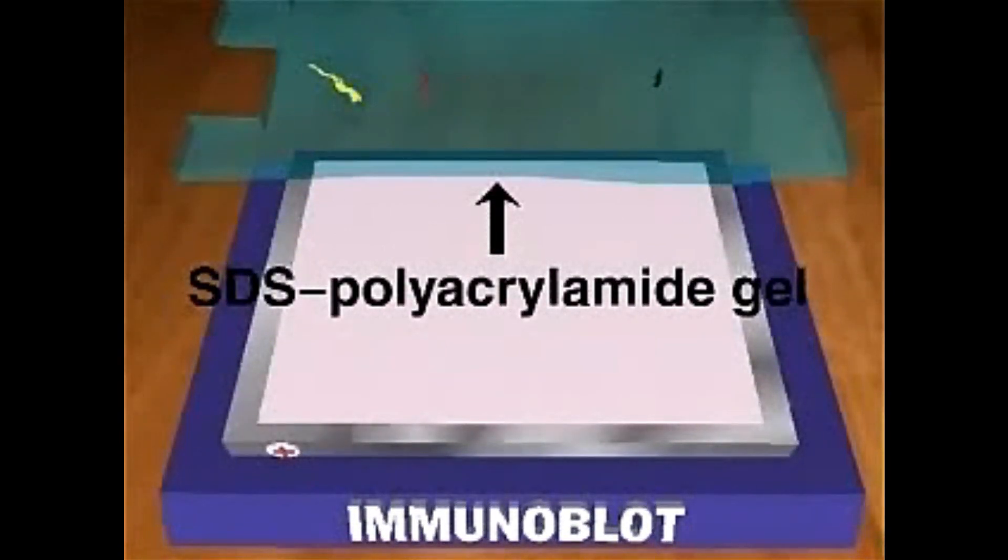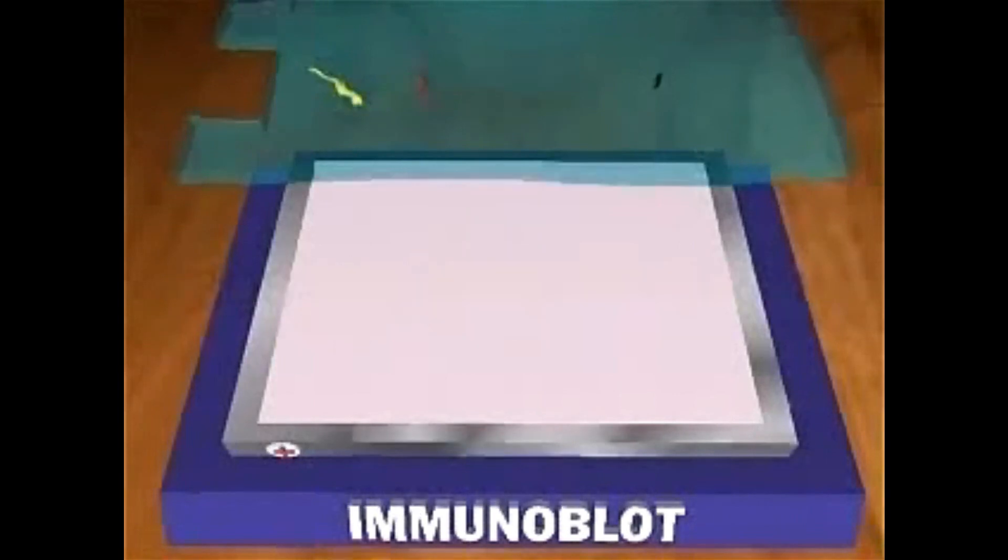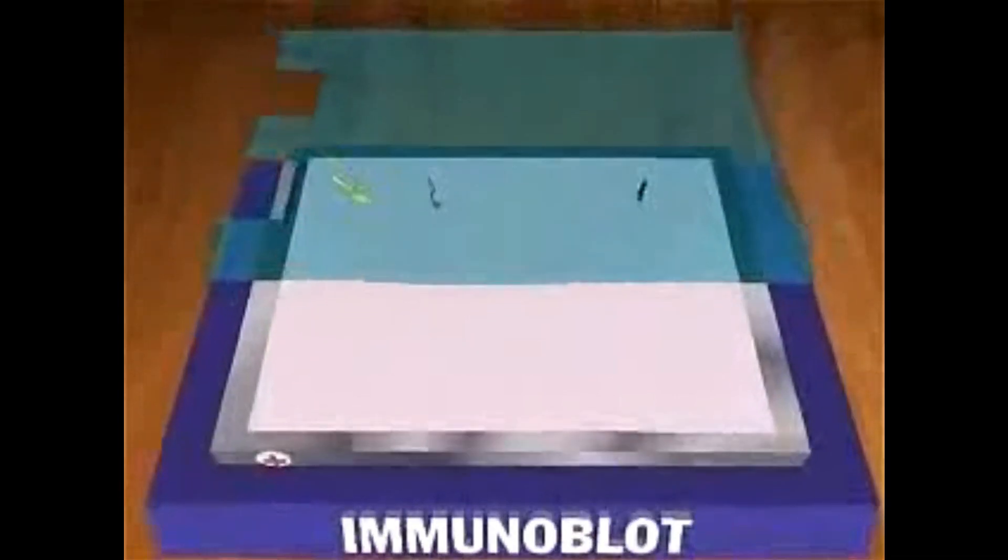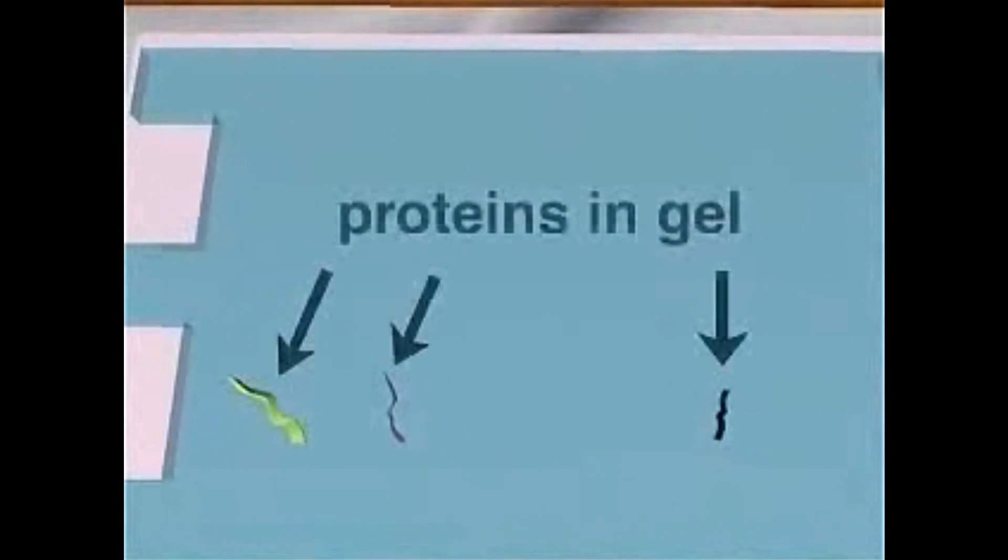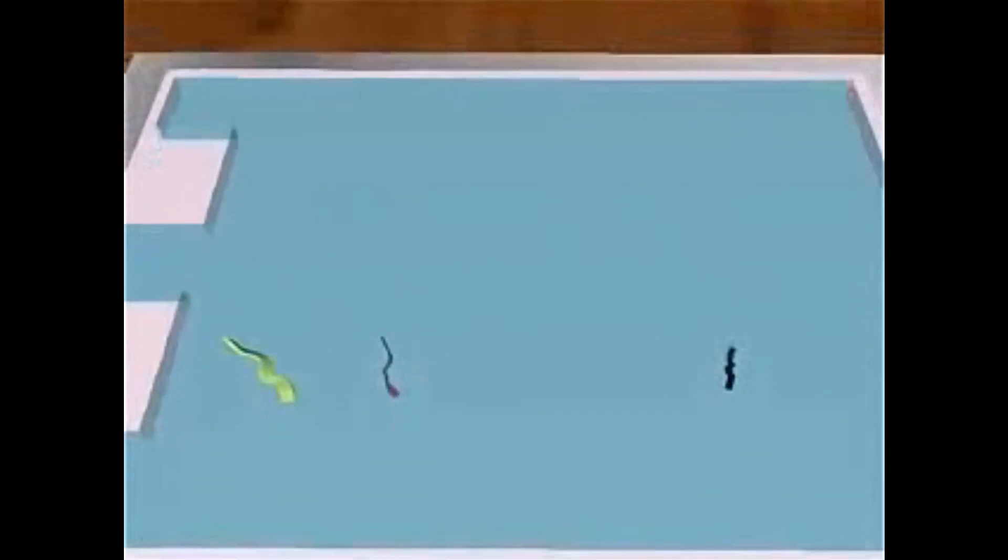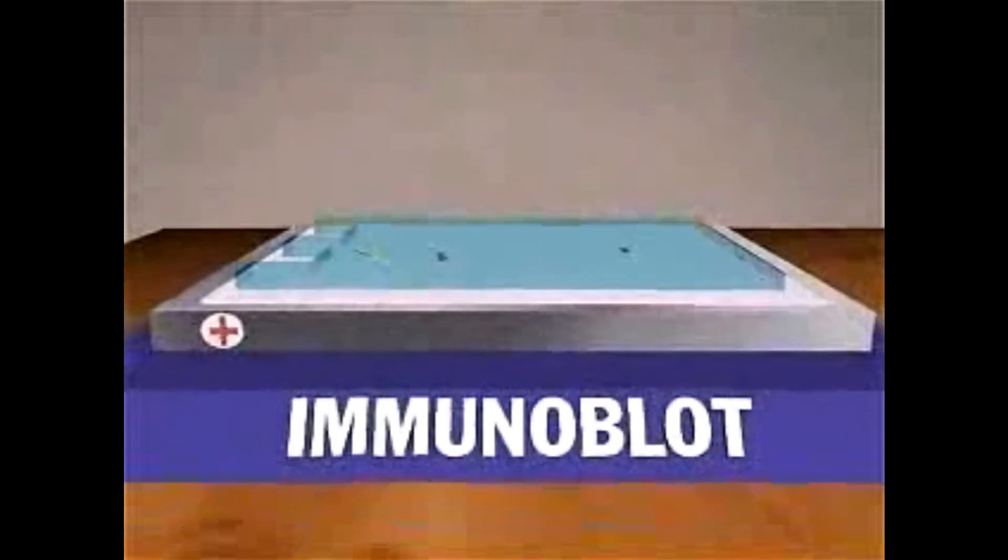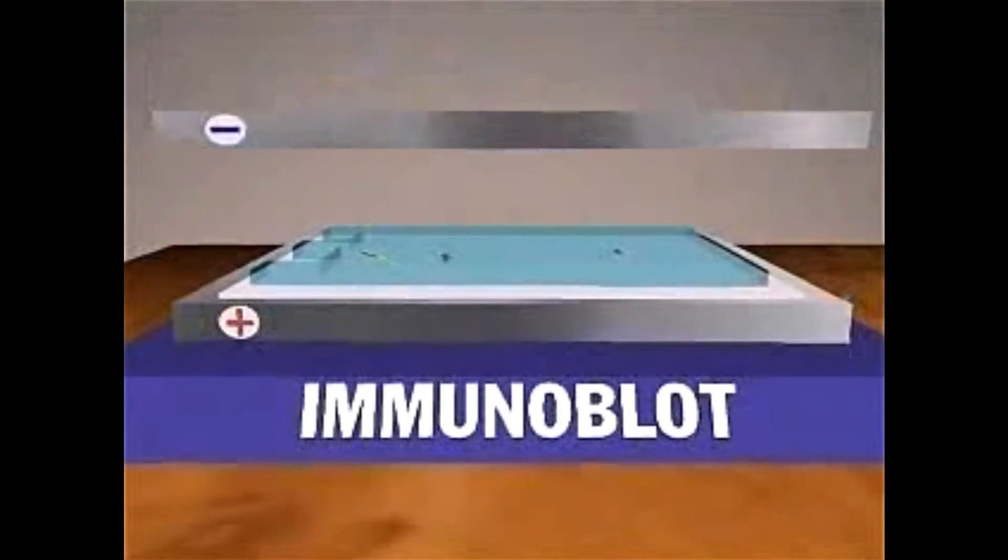The gel containing the separated proteins is placed on the membrane. Protein transfer is done by electrophoresis. In the electrical field generated by the power supply, proteins coated with negatively charged SDS migrate towards the positive electrode.